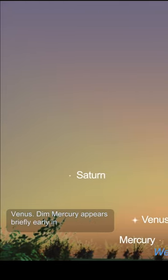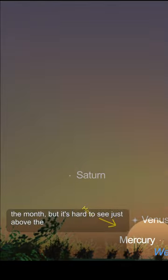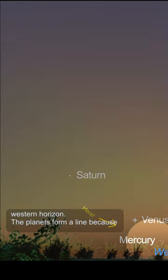Dim Mercury appears briefly early in the month, but it's hard to see just above the western horizon.